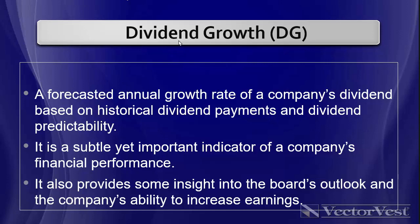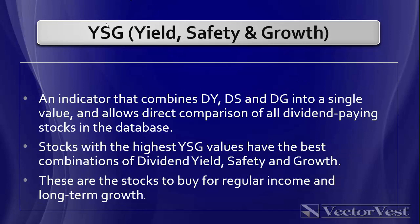Companies that are consistently paying a reliable dividend will get a high dividend safety score. For example, a company paying around 5-6% consistently each year will score well, as opposed to one with erratic payments — 8% one year, zero the next, 14% the year before. We also look at dividend growth — a forecasted annual growth rate based on historical payments. We want positive dividend growth, not negative. Then we combine all three into one master indicator: yield, safety, and growth — the YSG — on a scale of zero to two.